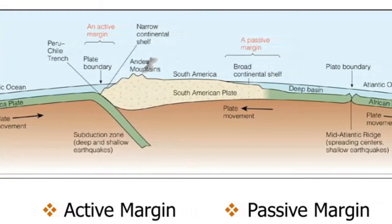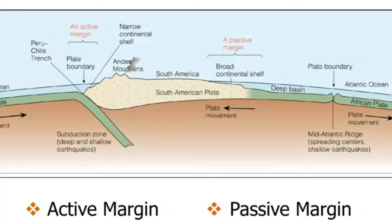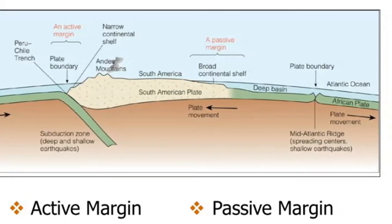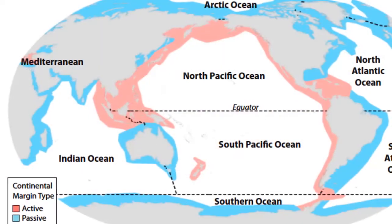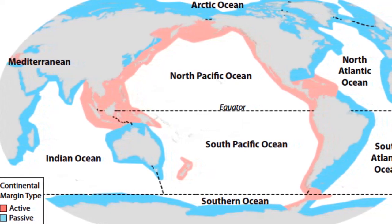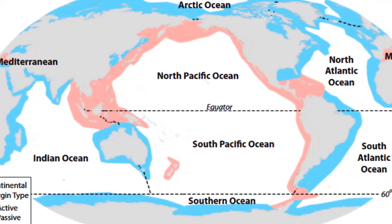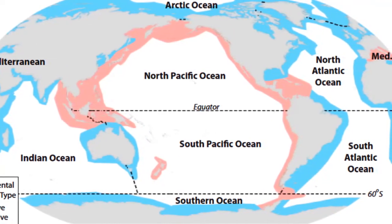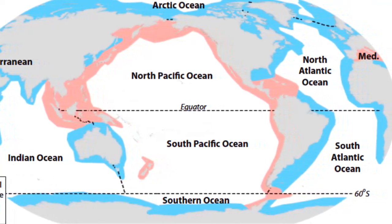Passive margins are found along most of the coastal areas that surround the Atlantic and Indian Oceans, including the east coasts of North and South America, as well as the coastal areas of Europe and Africa. Passive margins are not situated along an active plate boundary, and therefore experience very little volcanism and few earthquakes. In these passive areas, weathered materials eroded from the adjacent landmass accumulate to form a thick, broad wedge of relatively undisturbed sediments.